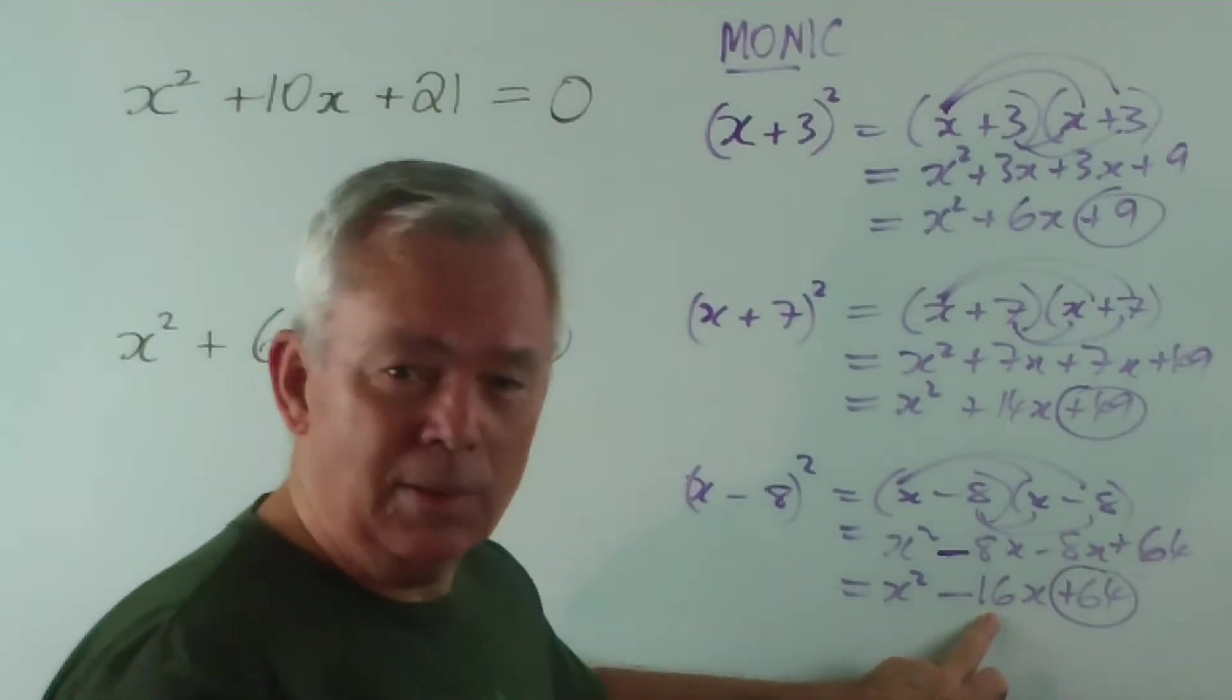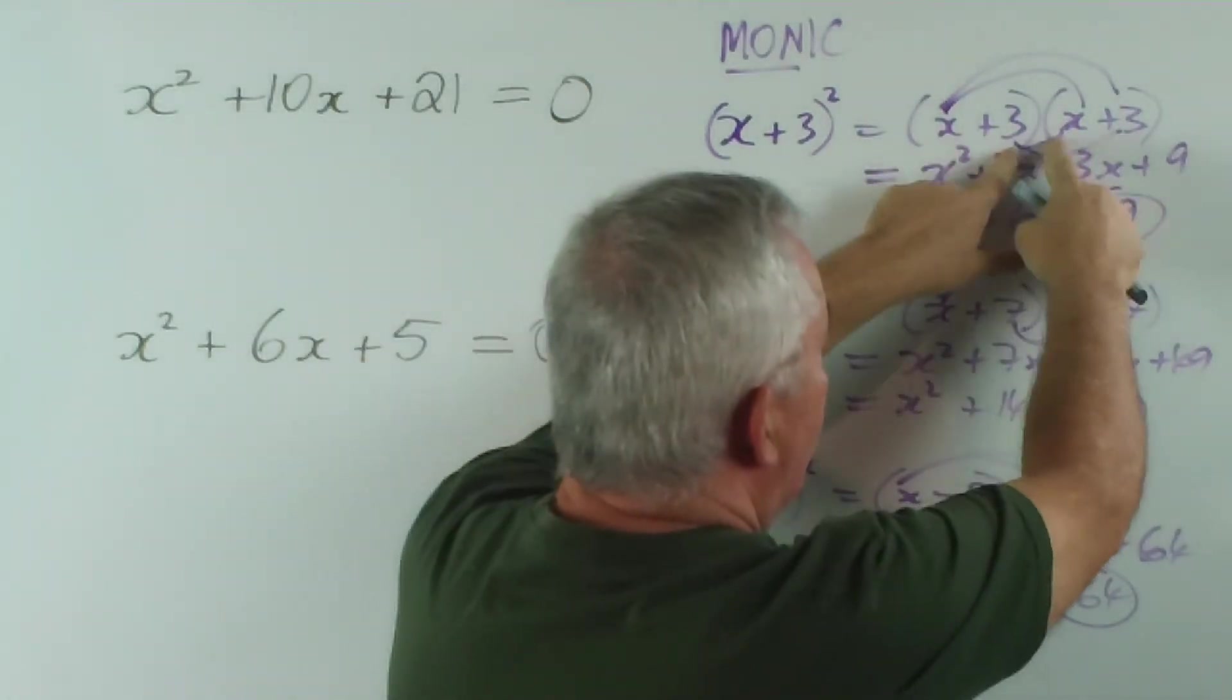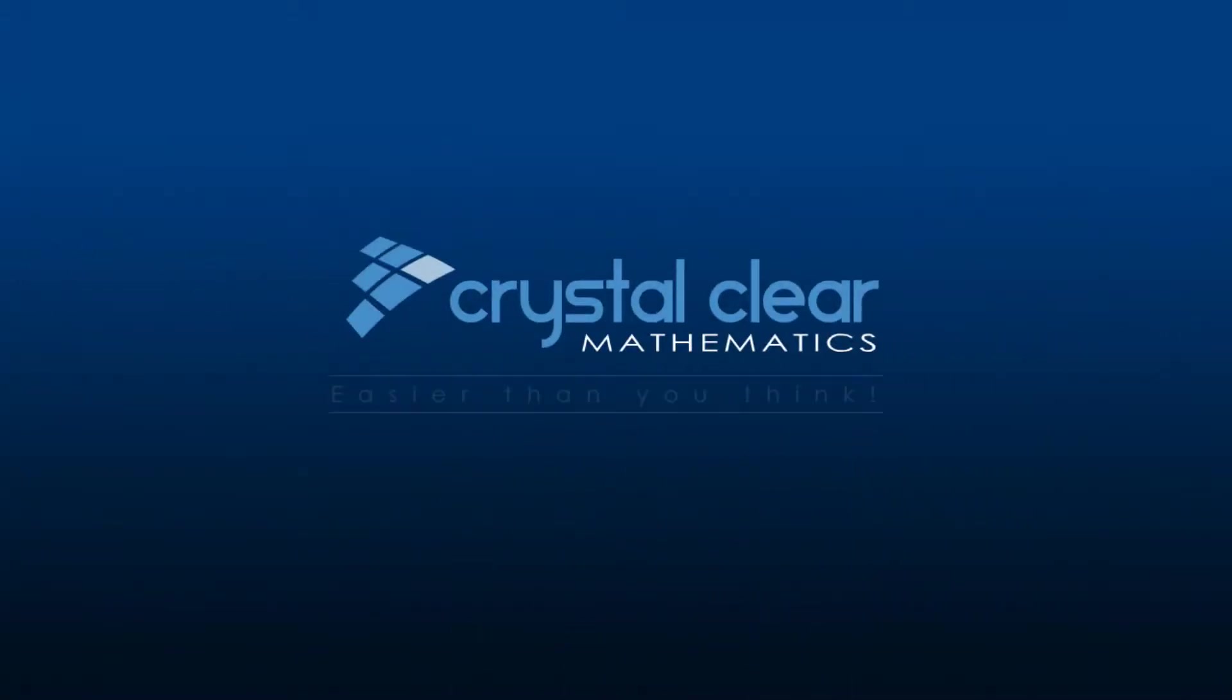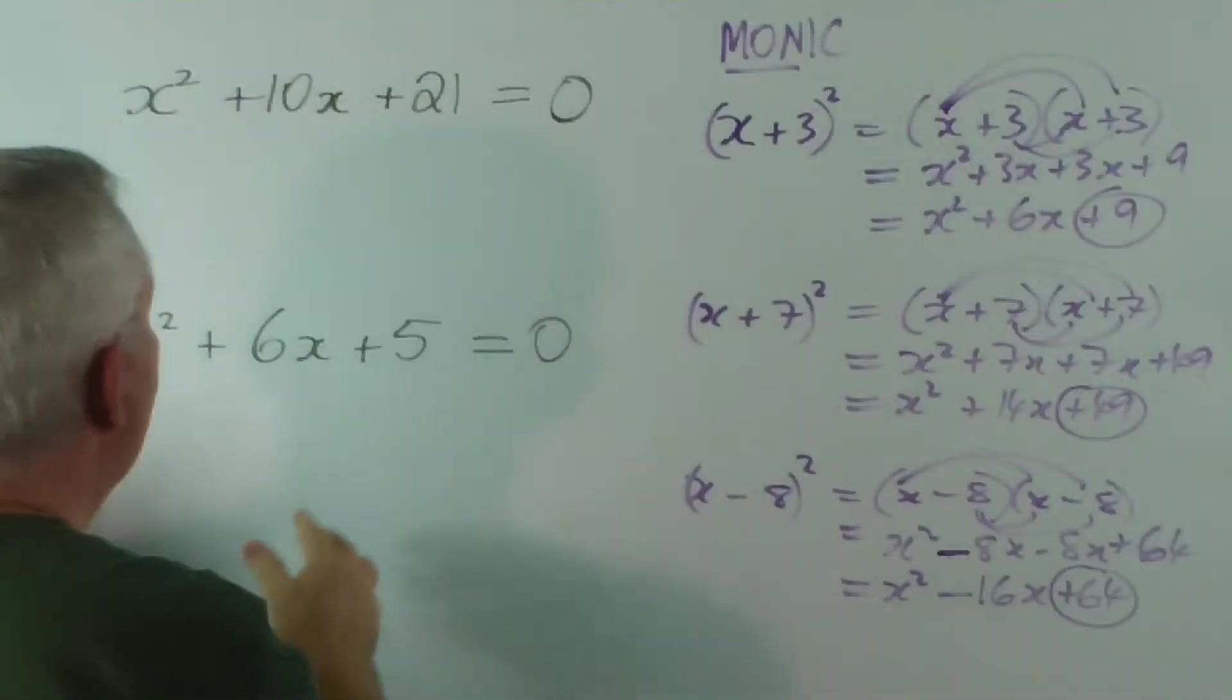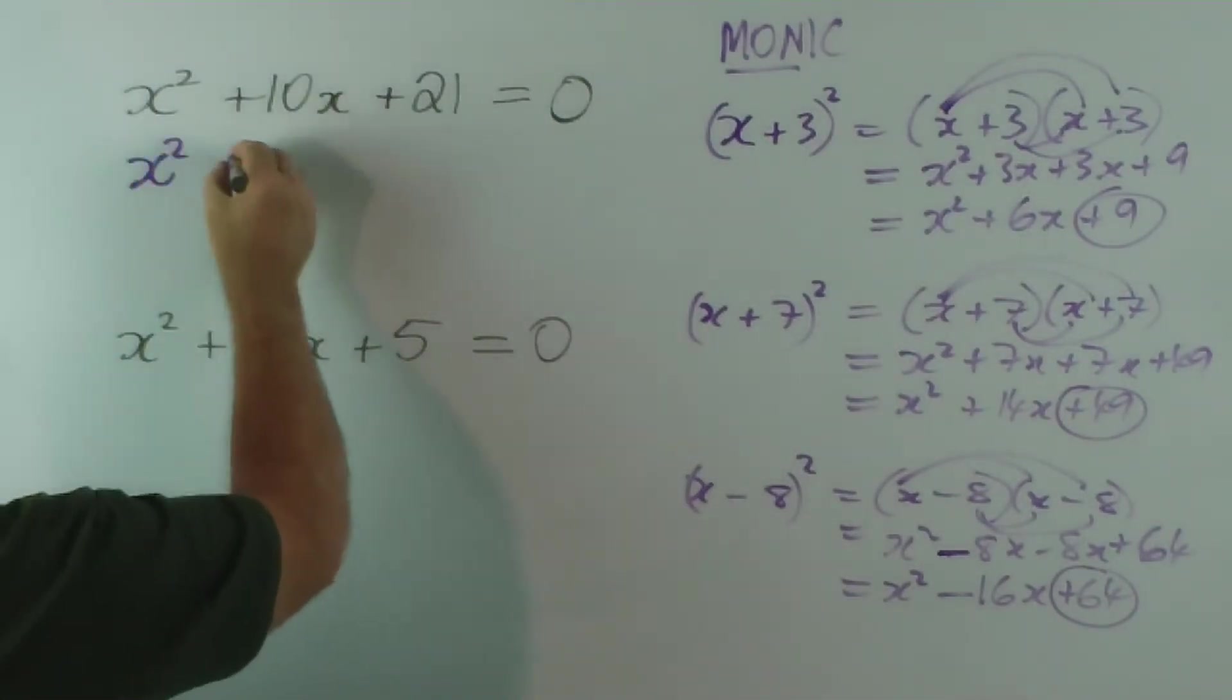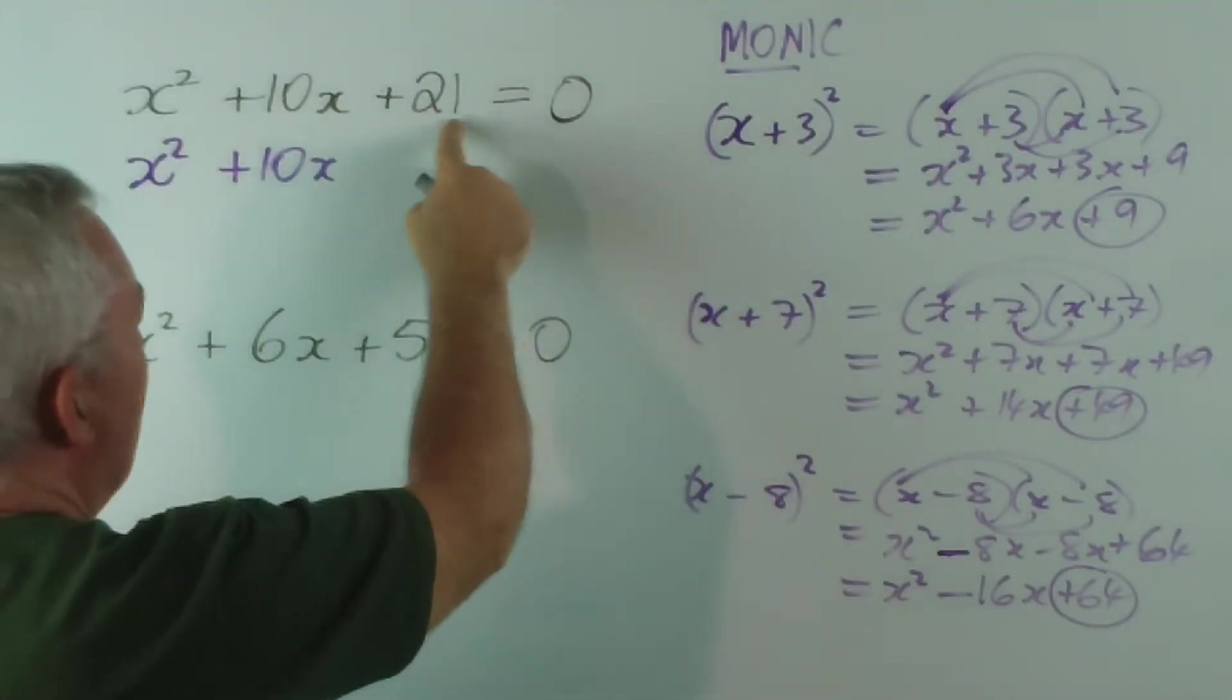So this number in the middle is double the number that's going to be inside the square, just because of the way that we get it twice when we're multiplying it out. Now understanding that pattern, let's look at this. You can see straight away these are not perfect squares, and I hope you noticed that before. What we're going to do, however, is leave the x² + 10x alone and subtract 21 from both sides.